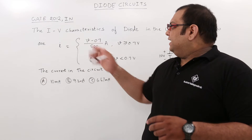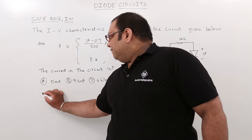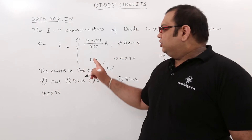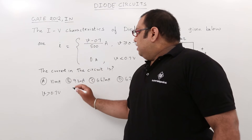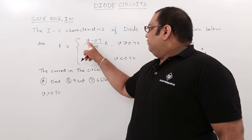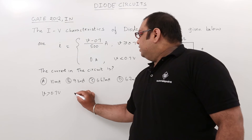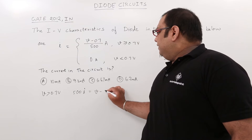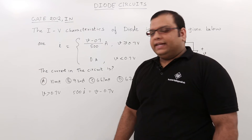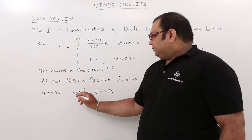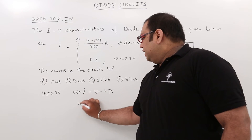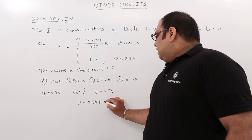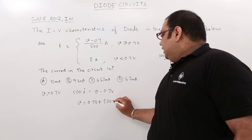When V is greater than 0.7 volts, we can rewrite the equation as 500 × I = V - 0.7 volts, and therefore the voltage across the diode is V = 0.7 volts + 500 × I.